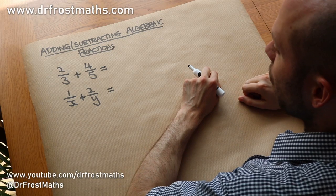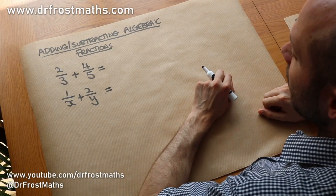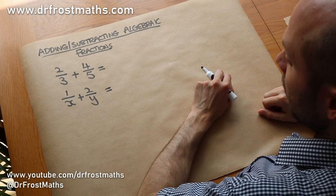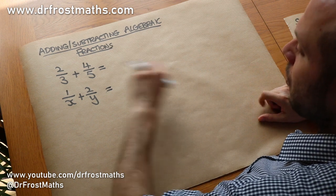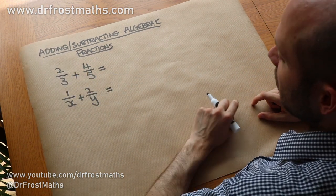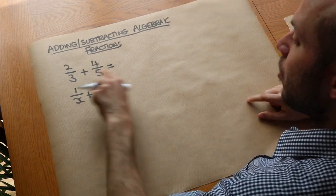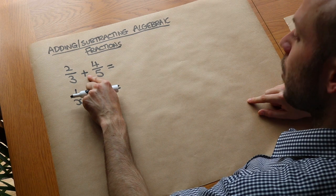Hello and welcome to this video on adding and subtracting algebraic fractions. Now let's say we were adding some normal fractions with just normal numbers. How would we do this?